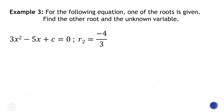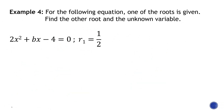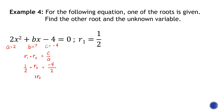For the last example, b is missing and r2 is also missing. If b is missing, we use the product formula first. We know a is positive 2 and c is negative 4. So r1 × r2 = c/a gives (1/2) × r2 = −4/2. Multiplying both sides by 2, r2 = negative 4. That's the second root.